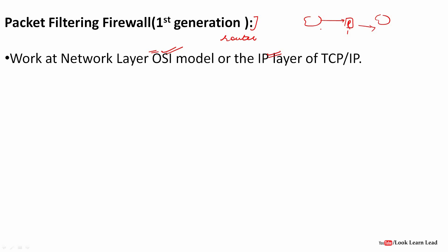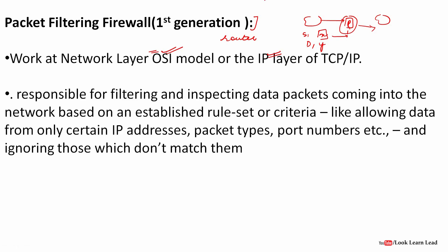In a packet filtering firewall, each packet is compared to a set of criteria. For example, if the source address is X or the destination address is Y, only then should the packet pass. The contents inside the packet don't matter — only the header, source, and destination are checked. The firewall then either allows or rejects the packets based on an established rule set.